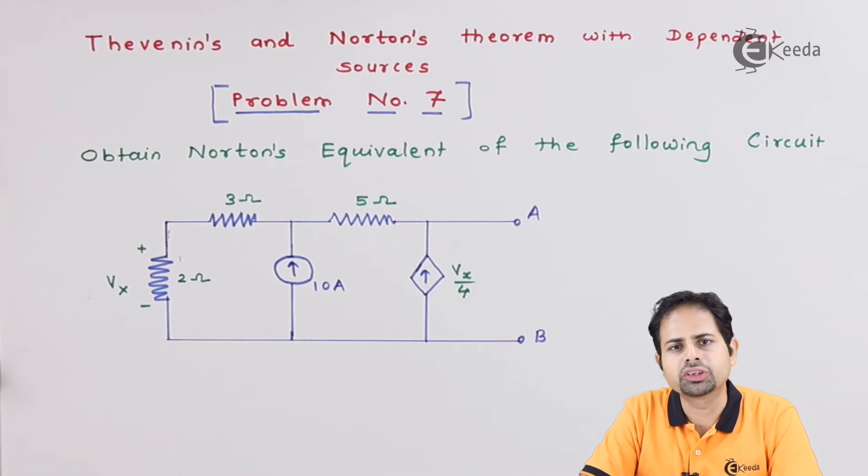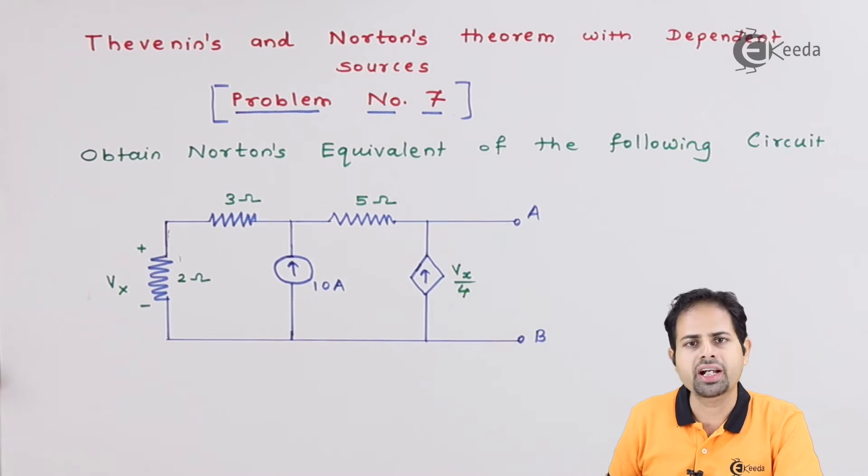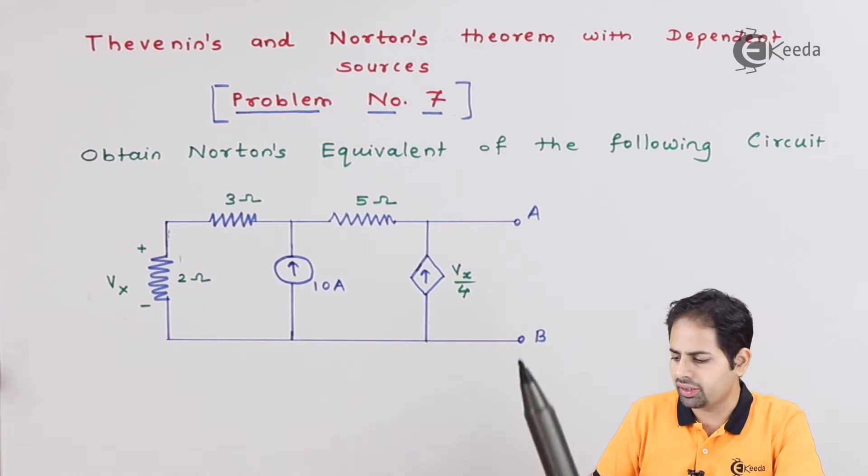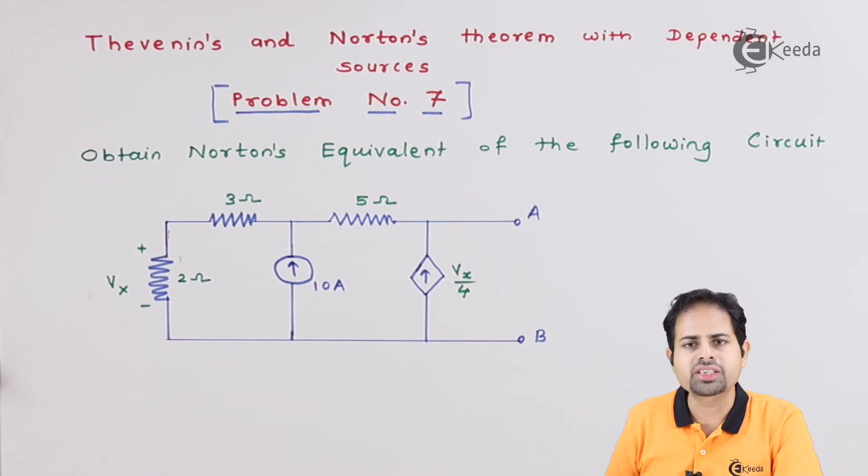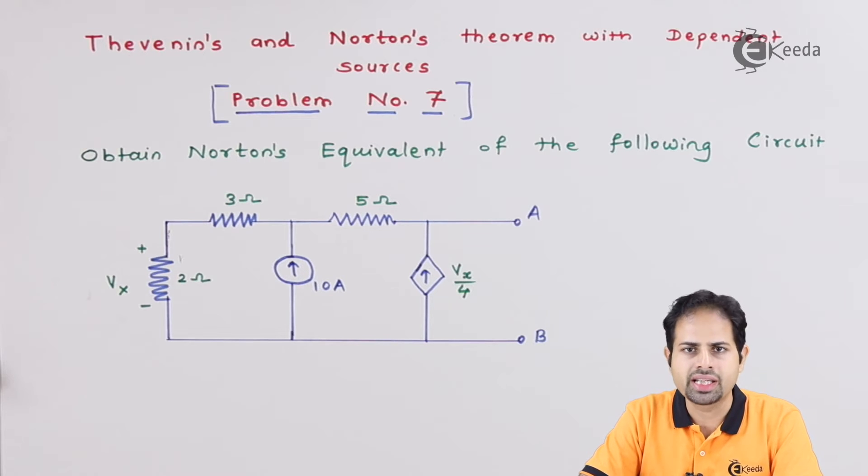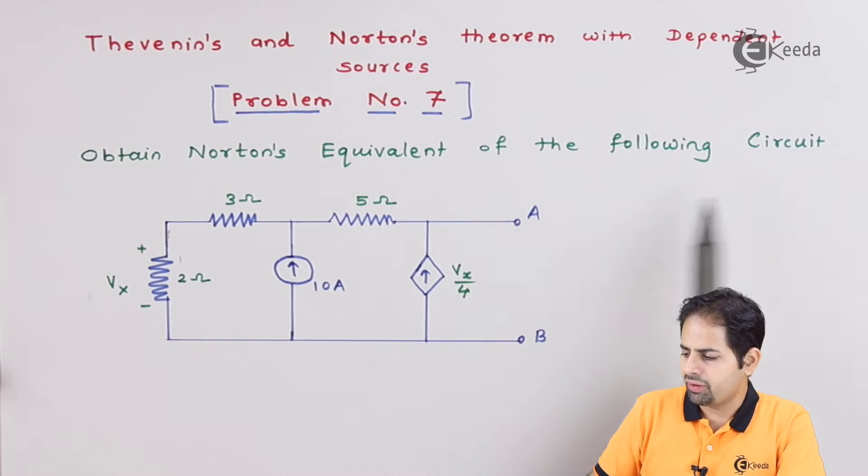So it is the same procedure. We will find the Thevenin's voltage across these points A and B. Then we will find the Norton's equivalent current across those points A and B. Also we will find Rn, that is Norton's equivalent resistance. That means resistance is voltage upon current. By using that formula we will find that resistance, and then we will draw that equivalent circuit also.